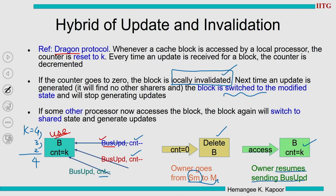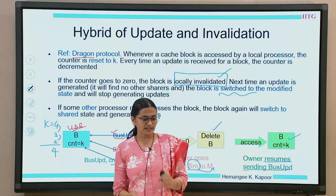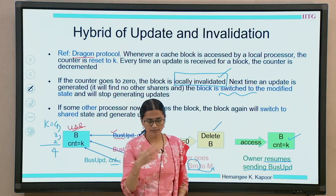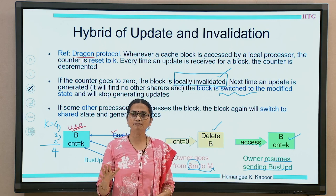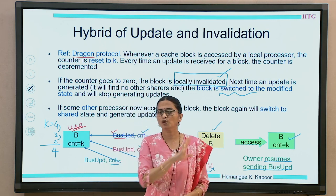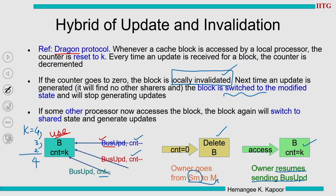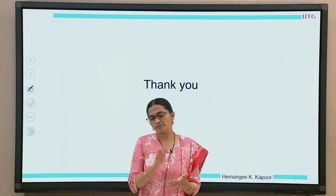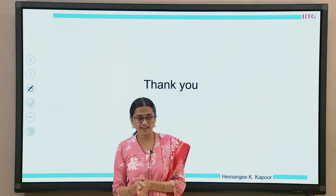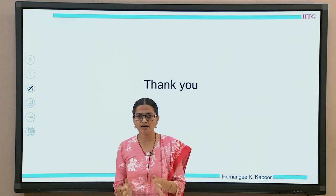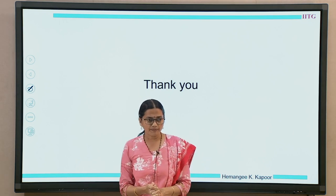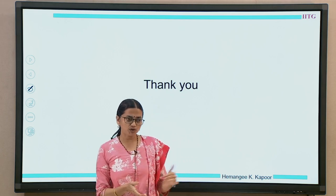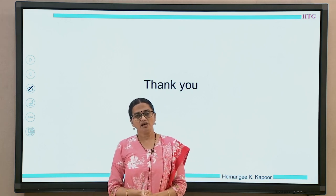The overall idea is: if bus updates are important, keep receiving them; if they are not important, invalidate the block locally. With this we have understood the variety of scenarios — when update is good, when invalidation is good, how to switch between the two, and the different methods available. In this lecture we also saw the miss classification example. Thank you.